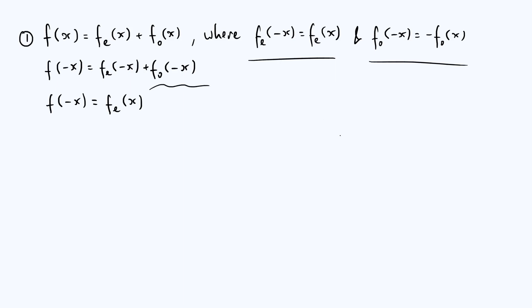And for the odd part, we use the symmetry property at the top right, which is that fo of minus x is minus fo of x. So now we get a minus sign here, and we get minus fo of x. I'm going to label that as equation two, because then equations one and two taken together are basically a pair of simultaneous equations that we can solve for fe and fo in terms of f.